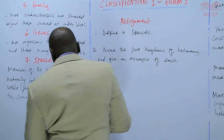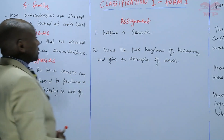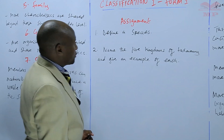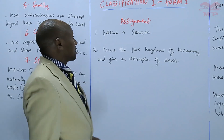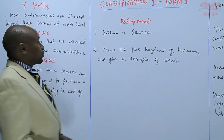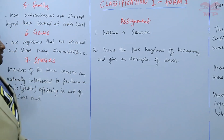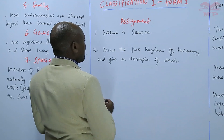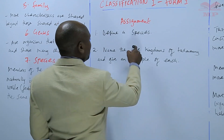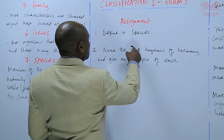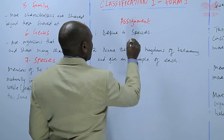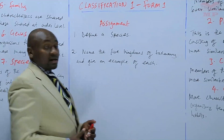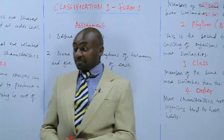For our assignment, the first question is to define a species, which we have talked about. Number two, name the five kingdoms of taxonomy and give an example of each. We'll stop there. Until next time, goodbye.